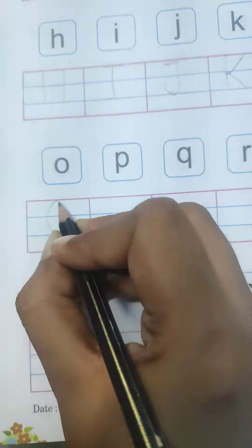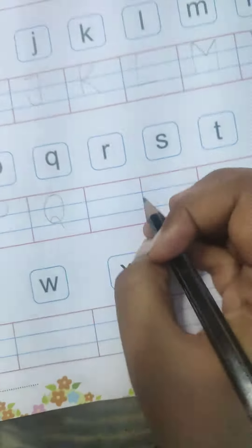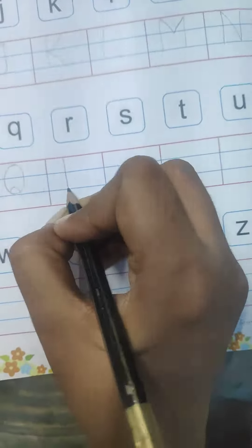P. P for papaya. Q. Q for queen. R. R for rat.